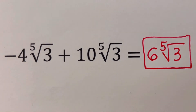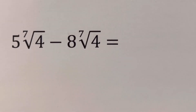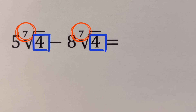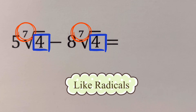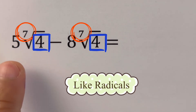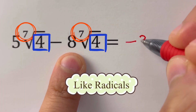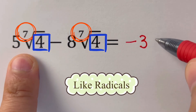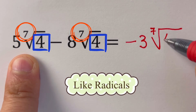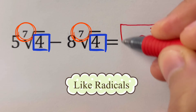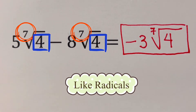In the next example, both indices are 7 and both radicands are 4, so this is an example of like radicals. We subtract their coefficients: 5 minus 8 equals negative 3, and we copy the radical expression — the seventh root of 4. So negative 3 times the seventh root of 4 is the difference of these two radical expressions.